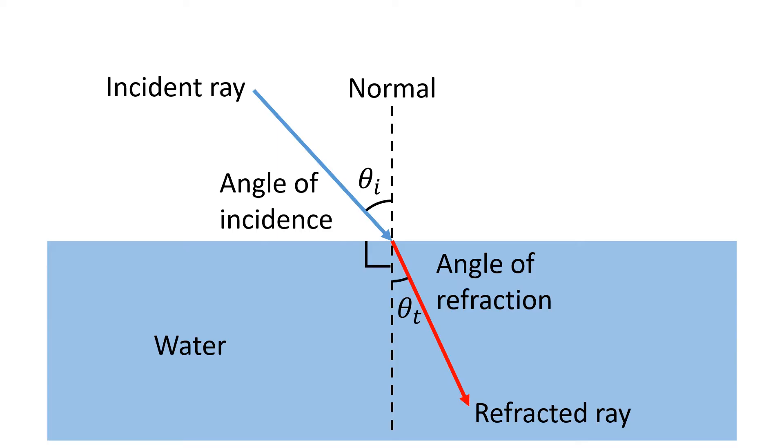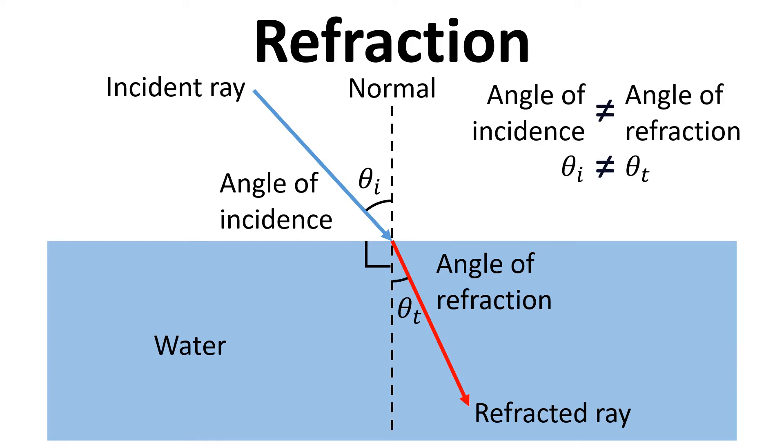We're using theta subscript i for the angle of incidence and theta subscript t for the refracted ray. This is referred to as refraction and what we find is that the angle of incidence does not equal the angle of refraction except for when theta subscript i equals zero. If that ray came in along the same line as the normal then it would continue to go along that line.